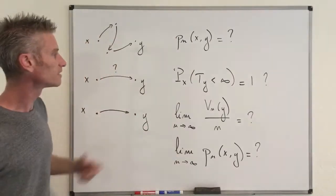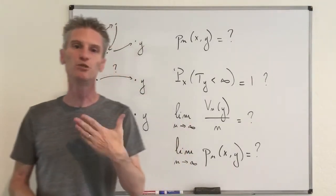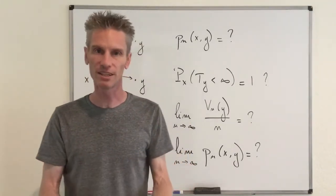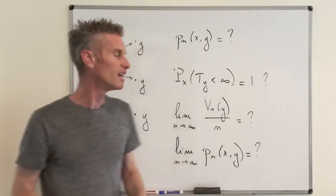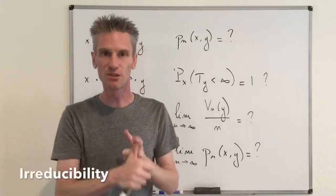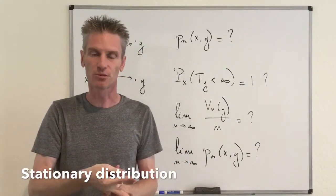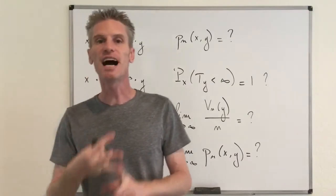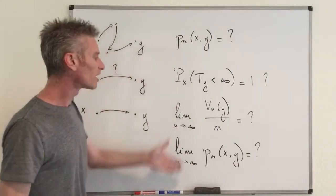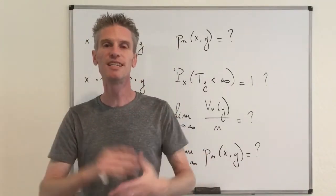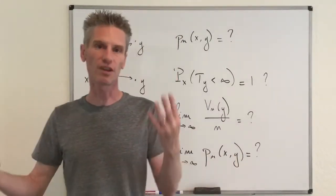Before answering those four questions, for some of them we first need to check some important ingredients. Those ingredients are: irreducibility, positive recurrence, the expression of the stationary distribution if there is one, and finally aperiodicity. I'm going to use the diagram to show you the steps you need to follow to check all four ingredients, and once we understand how to check those aspects, I'll go back to the four questions.